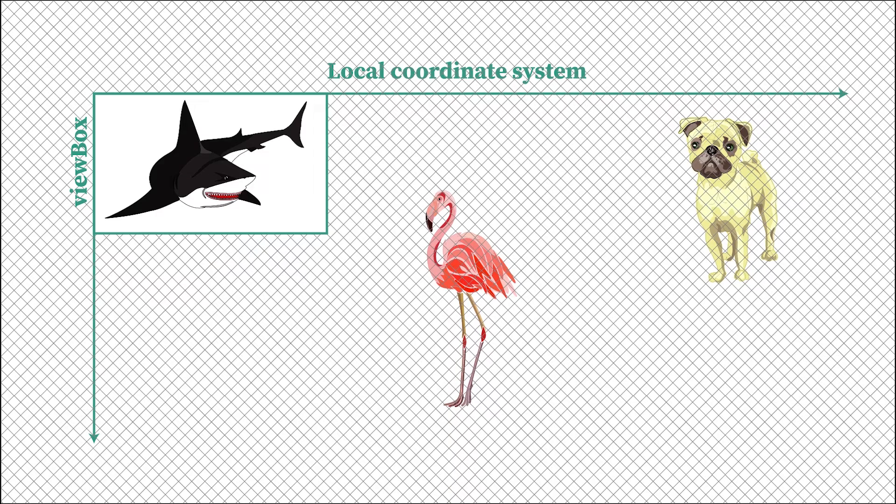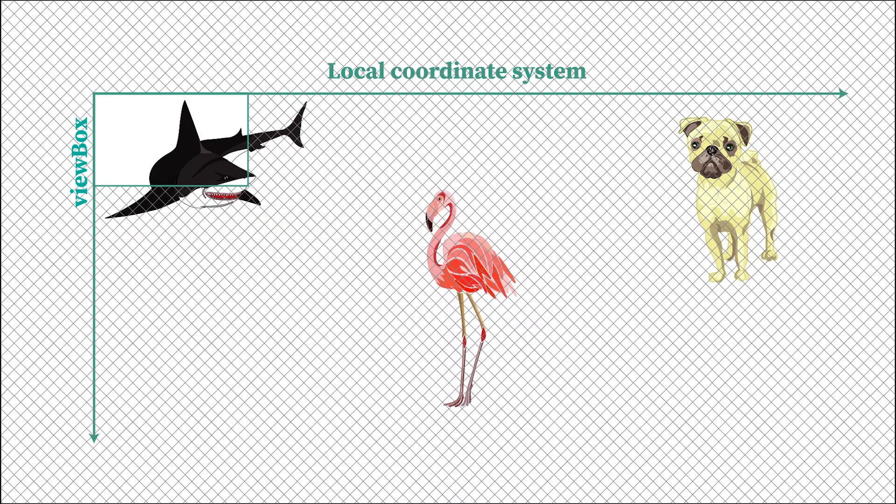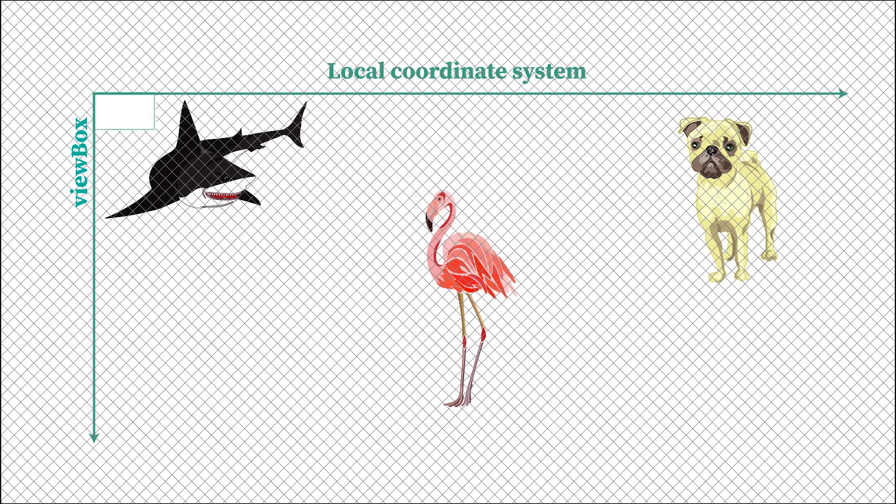In our example, the value of the viewbox is equal to 0, 0, 0 and 0. And that means that the top left point of the viewbox coincides with the origin point of the local coordinate system. And the width and the height of the viewbox are both equal to 0.